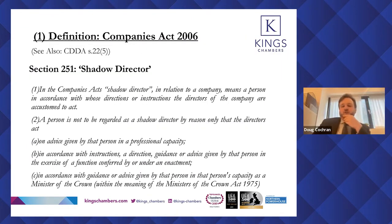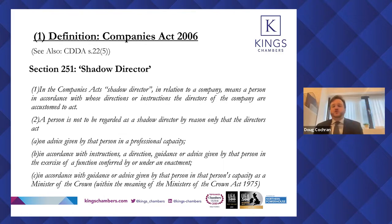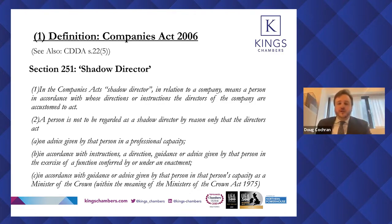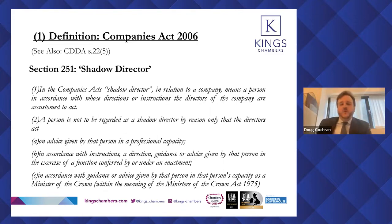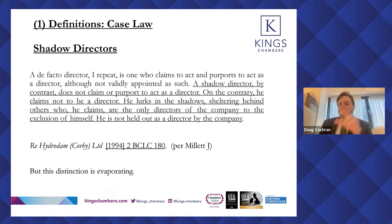We then turn to the question of being a shadow director — a different creature than a de facto director. It's someone whose directions or instructions the directors of the company are accustomed to act in accordance with. Most importantly, subparagraph 2a provides an exception for those who are acting on advice given by that person in a professional capacity. That amendment was added by the coalition government to exclude solicitors, accountants, and the like, who might otherwise be thought caught by the strictures of being a shadow director because they give loads of advice and the directors habitually act upon that.